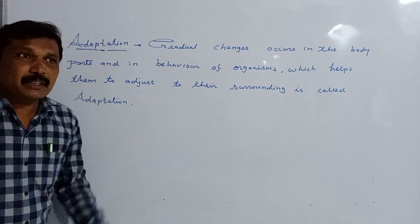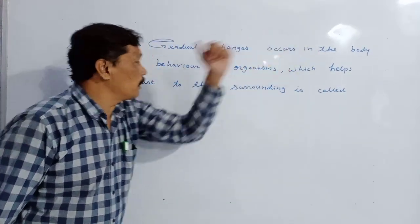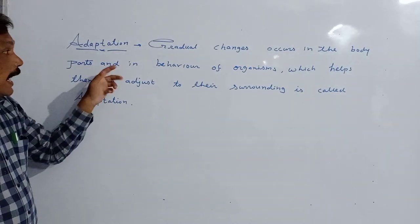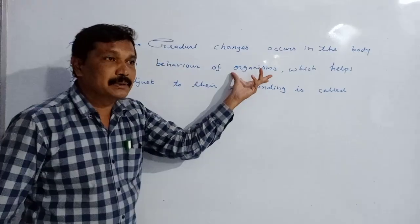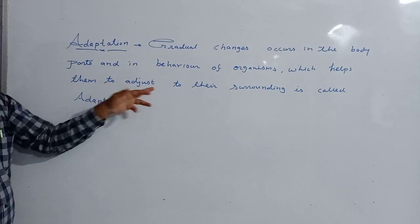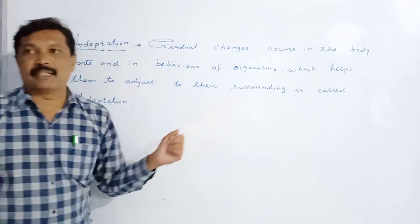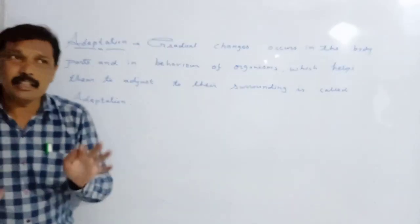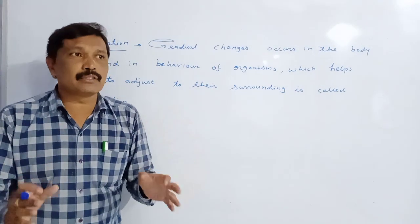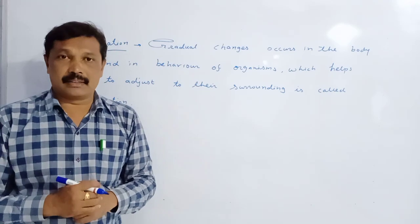What is adaptation? Gradual changes occurring in the body parts and in the behaviour of organisms which help them to adjust to their surroundings is called as adaptation. It is because of adaptation we see a great variety of plants and animals around us.